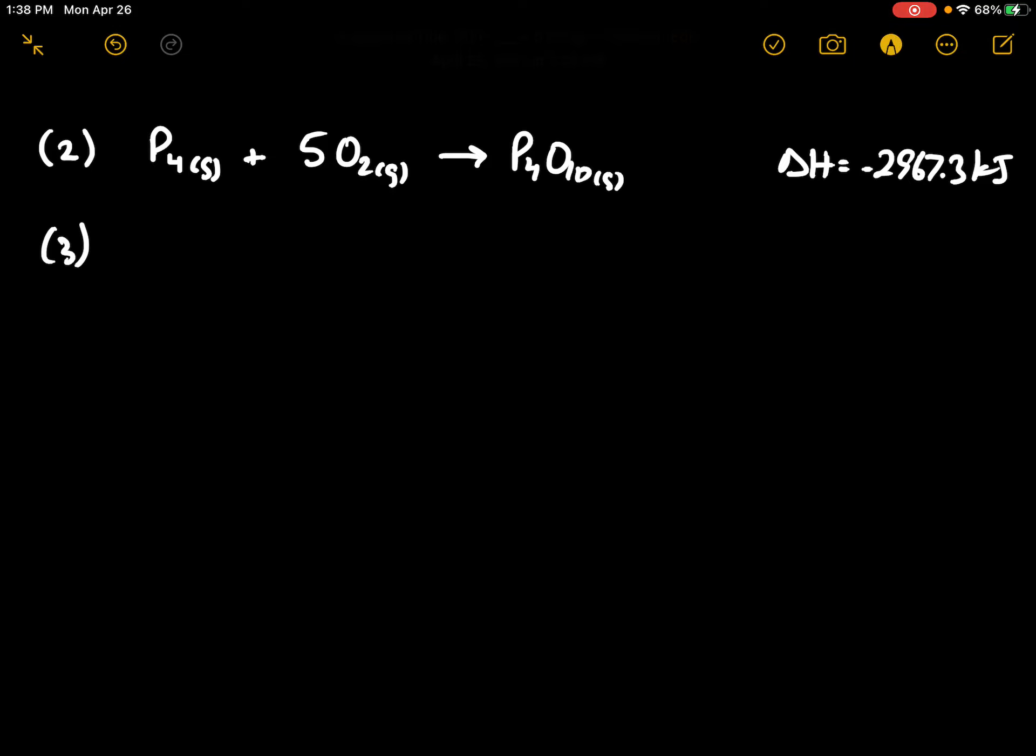And we'll take equation 3, but we're going to multiply it times 6, so this will give me 6PCl3 and 6Cl2 produce 6PCl5, and the delta H here would be 6 times minus 84.2 kilojoules.